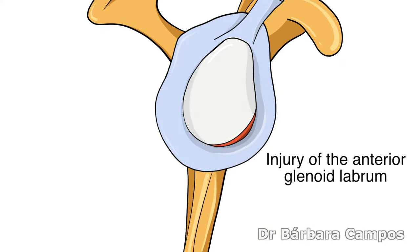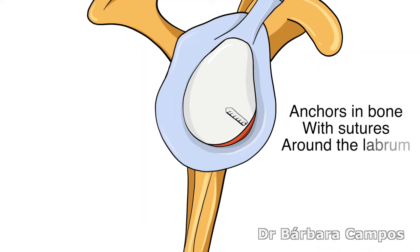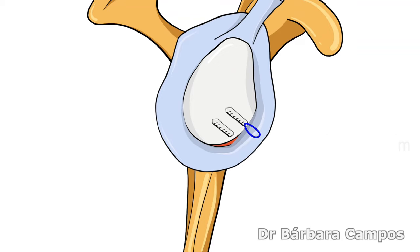The capsule is released from the scapula and retensioned laterally and superiorly, and then reinserted with two to three small anchors.